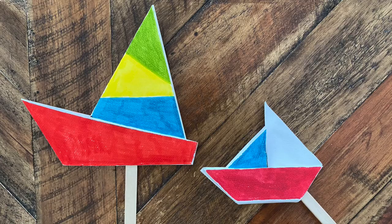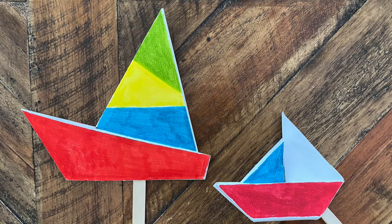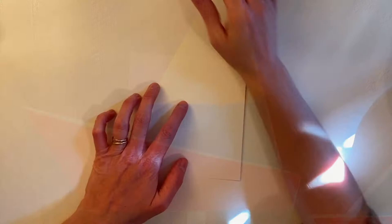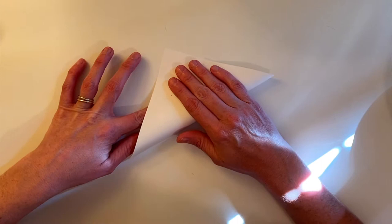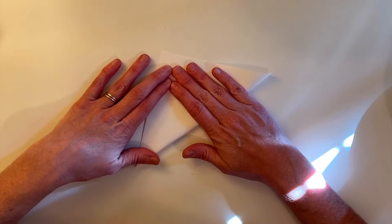For our art project, I'm going to show you how to create two different types of origami sailboats. We're going to start with this one first. The first step is to take one of your six by six inch square pieces of watercolor paper and fold it corner to corner like this. Make sure you really press down on that crease.